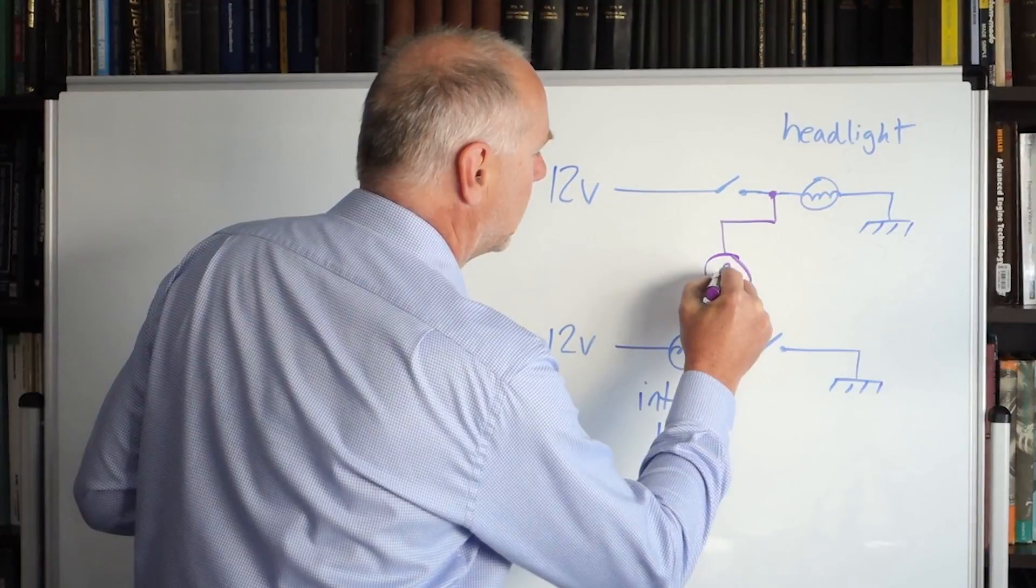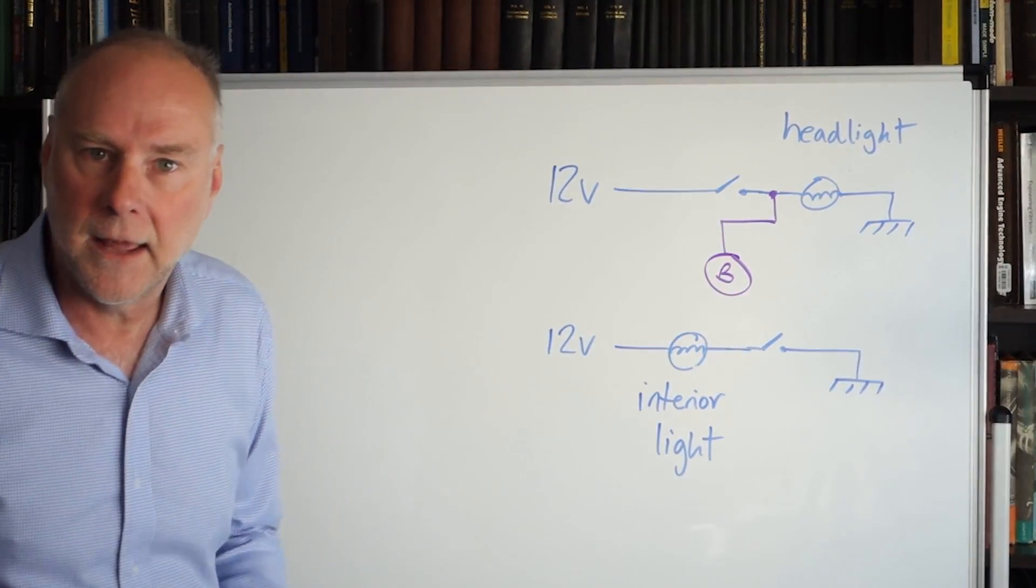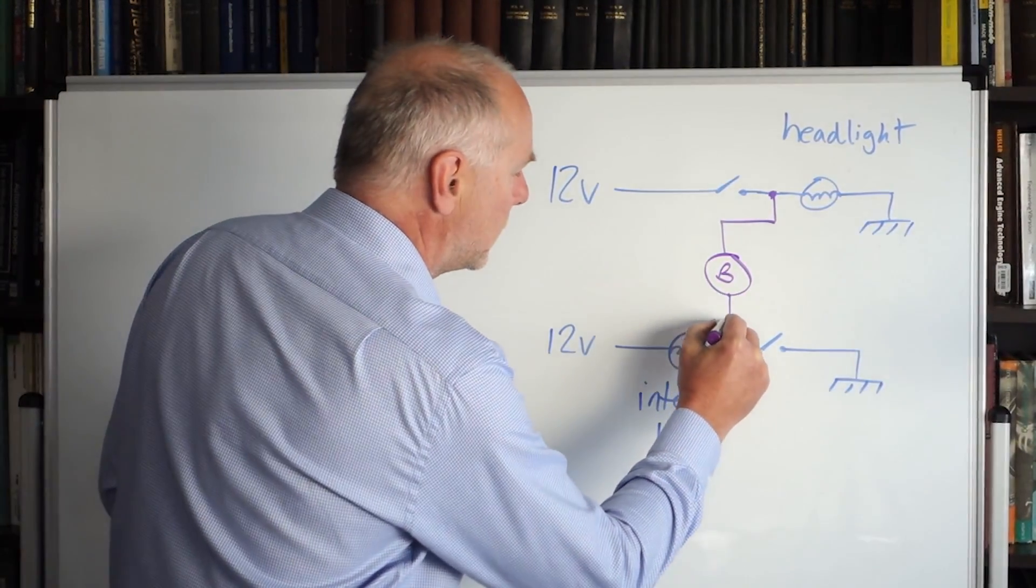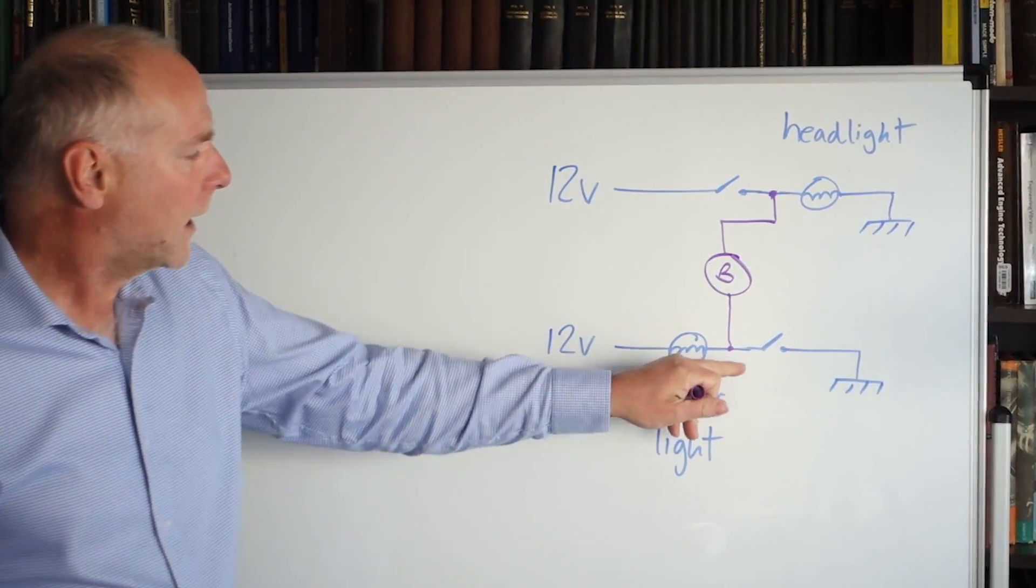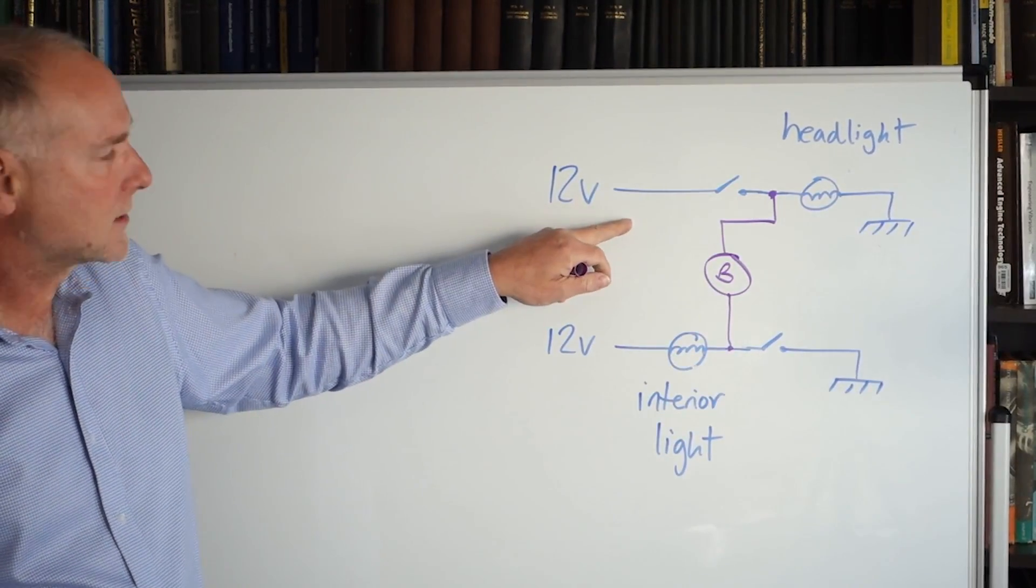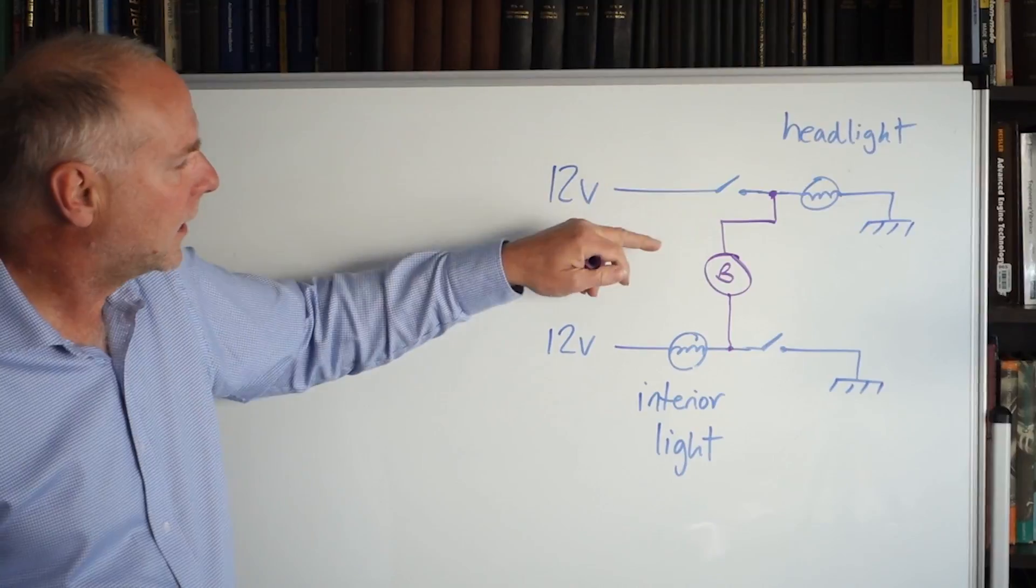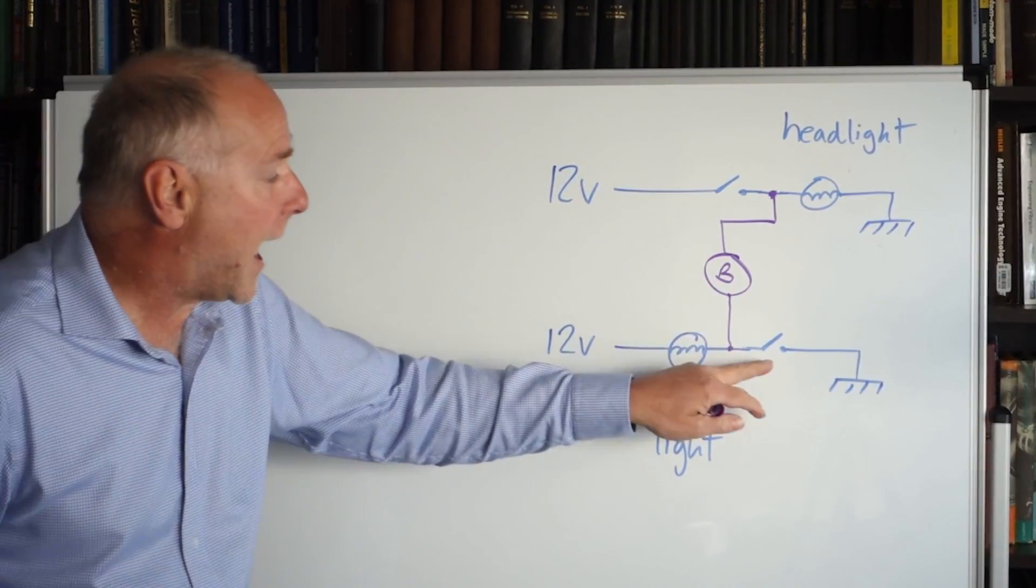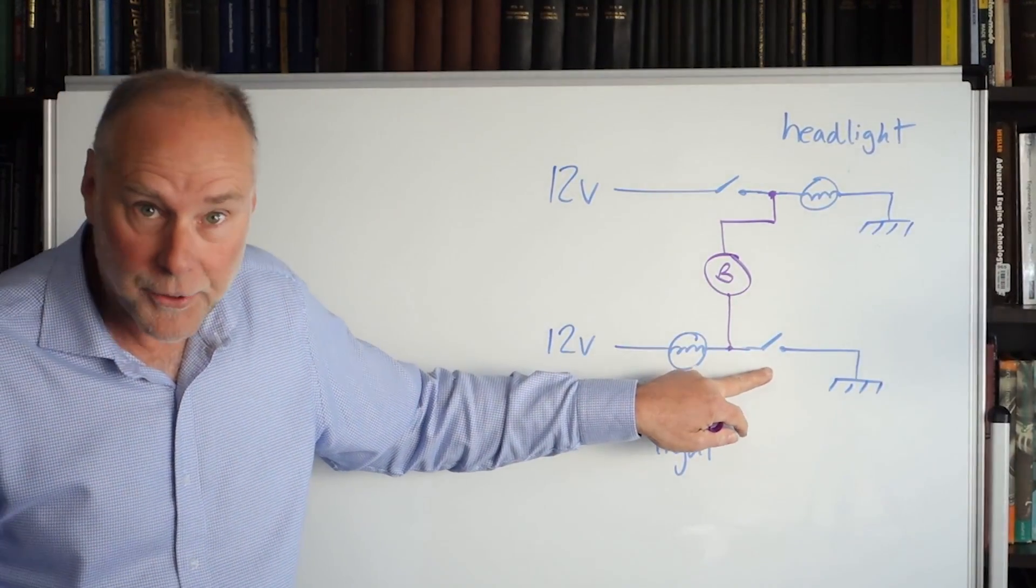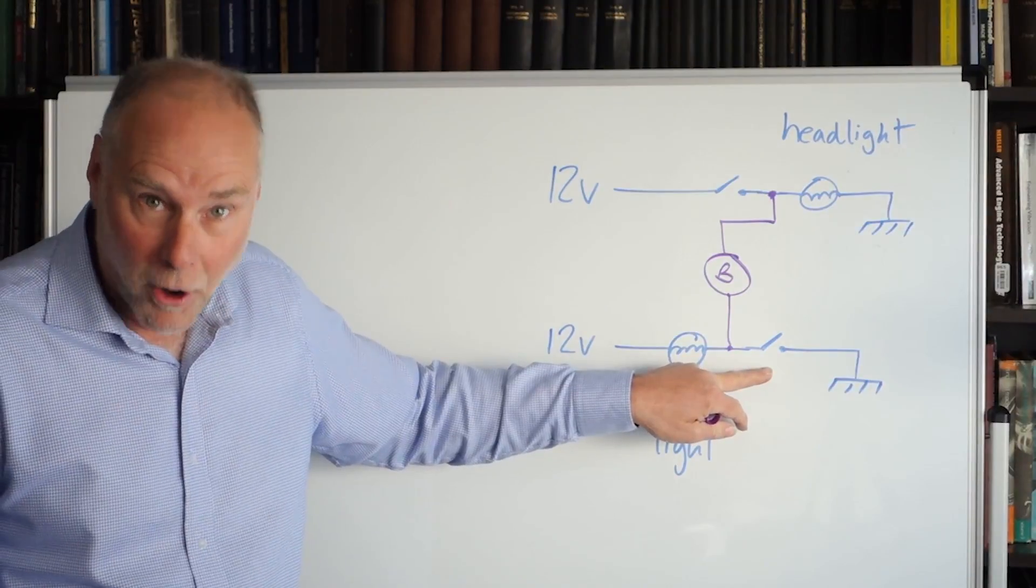We put the buzzer in here, and then we connect the other side of the buzzer to there. Now, look what happens. If the headlights are on, there's 12 volts available there. If the headlights are on and the door switch is closed because the interior light has come on when you've opened the door...